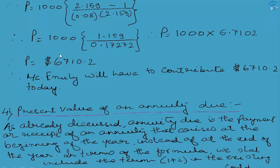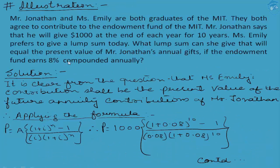So $6,710.20 is the lump sum amount which Ms. Emily should deposit today, right now, if she wants this amount to match that of Mr. Jonathan's contribution. Now I would like to give you one simple exercise. You can do it by yourself — just taking a cue from this numerical. You can try to calculate the future value of Mr. Jonathan's contribution using the formula Fn = A × [(1 + i)^n - 1] / i. The term within the bracket — if you want — you can readily refer to the tables, but the table you refer to shall be the future value of an annuity.